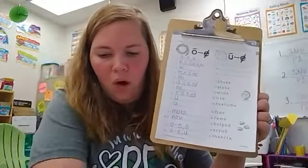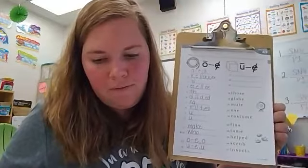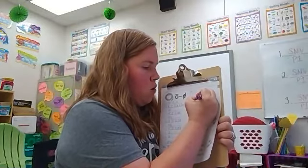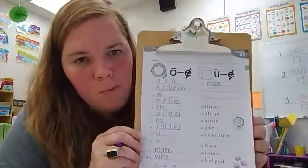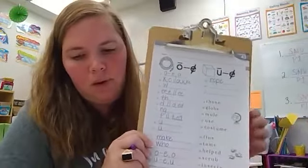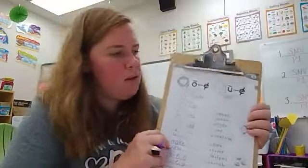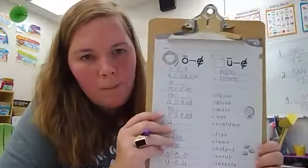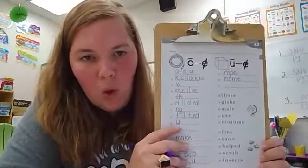Let's practice some more spelling words with O consonant E and U consonant E. Number 15 is rope: R-O-P-E has O consonant E. Number 16 is home: H-O-M-E, again O consonant E. Number 17 is cute: C-U-T-E, U consonant E.